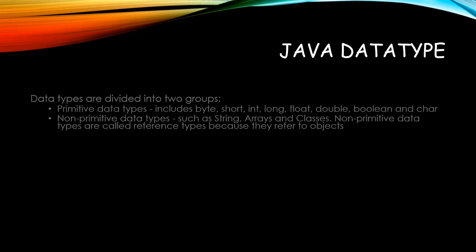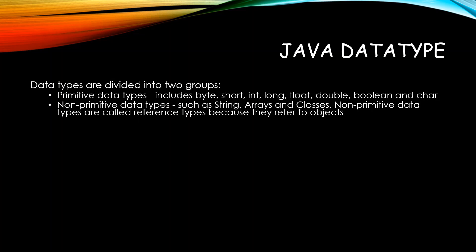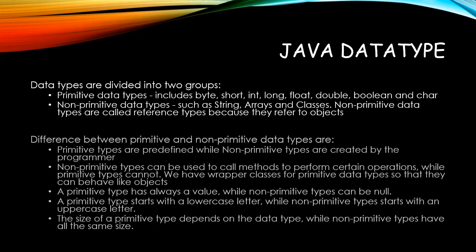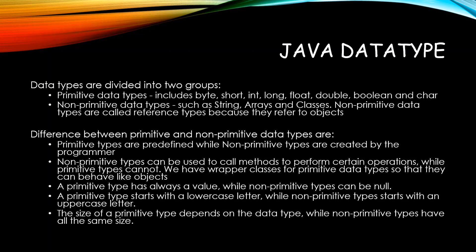Java data types: there are two types of data types in Java — primitives and non-primitives. Primitives include byte, short, int, long, float, double, etc., while non-primitives include String, arrays, and classes. Non-primitive data types are called reference types because they refer to objects. The major difference is that primitives are predefined while non-primitives are created by the programmer themselves, and non-primitives can be used to call methods and perform operations on them.